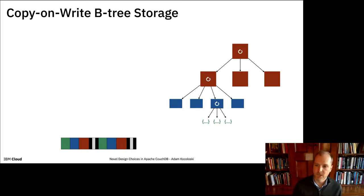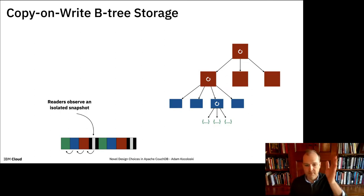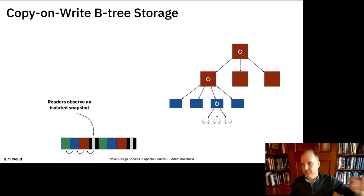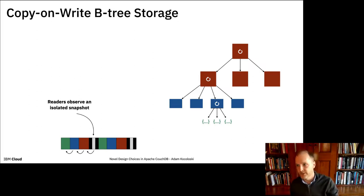This copy-on-write update path does a few nice things for us. Snapshot isolation falls out in a rather straightforward fashion — a reader who starts a connection grabs the last header observable in that file, and uses everything that header points to for all subsequent reads. Any concurrent writes naturally happen after that point in the file and will never be observed by that reader.